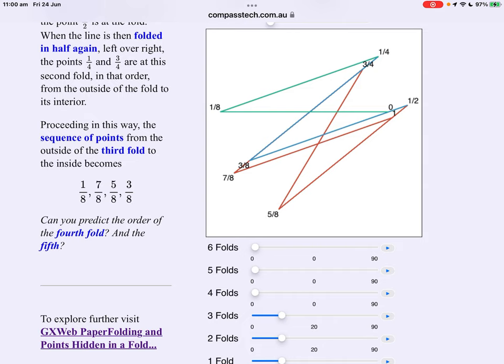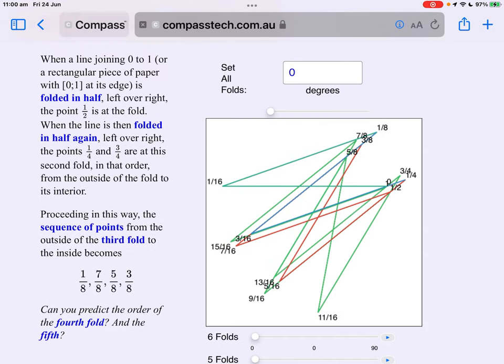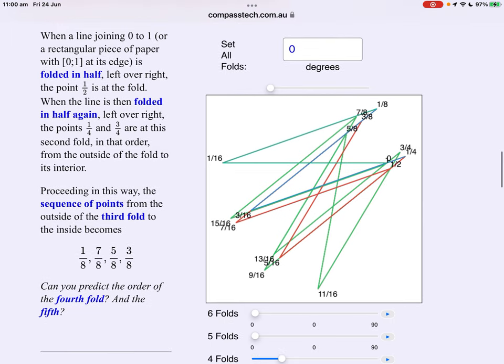A fourth fold. And things start to get more complicated. But predictable. Do you notice a pattern in the sequence?